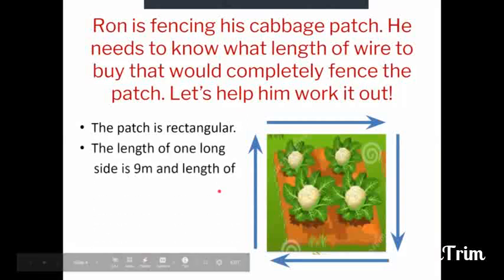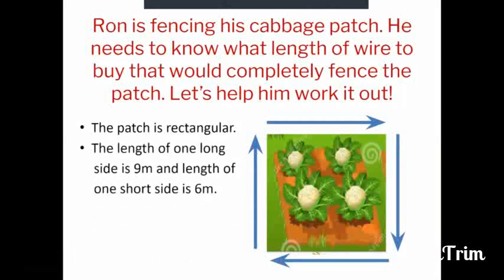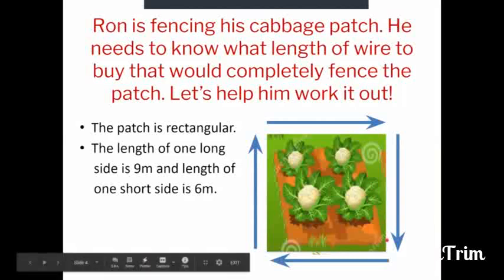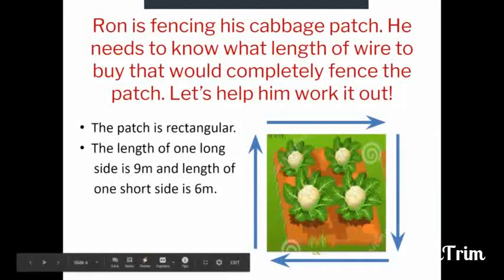Now, it says the length of one long side is 9 meters, and the length of one short side is 6 meters. But how many sides do we have? We have 4 sides. So if this side is the long side and it is 9 meters, it means that this side is also 9 meters. And if this side being the short side is 6 meters, it means the side opposite to this one, which is this side, is also 6 meters.